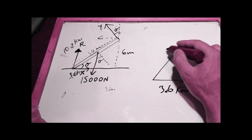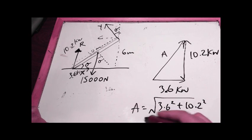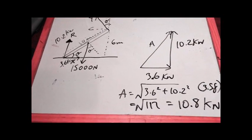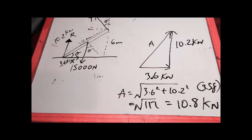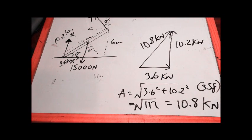So using Pythagoras, let's just call this force A. Force A is going to equal the root of 3.6 squared plus 10.2 squared, and that should give me 3.6 squared plus 10.2 squared equals 117, and the root of 117 gives me 10.812, but we can just round that to 10.8 kilonewtons to 3 significant figures. That's kind of gone off the table there. So that is the resultant, so A here is 10.8 kilonewtons, and I believe that is the question done. Thank you.